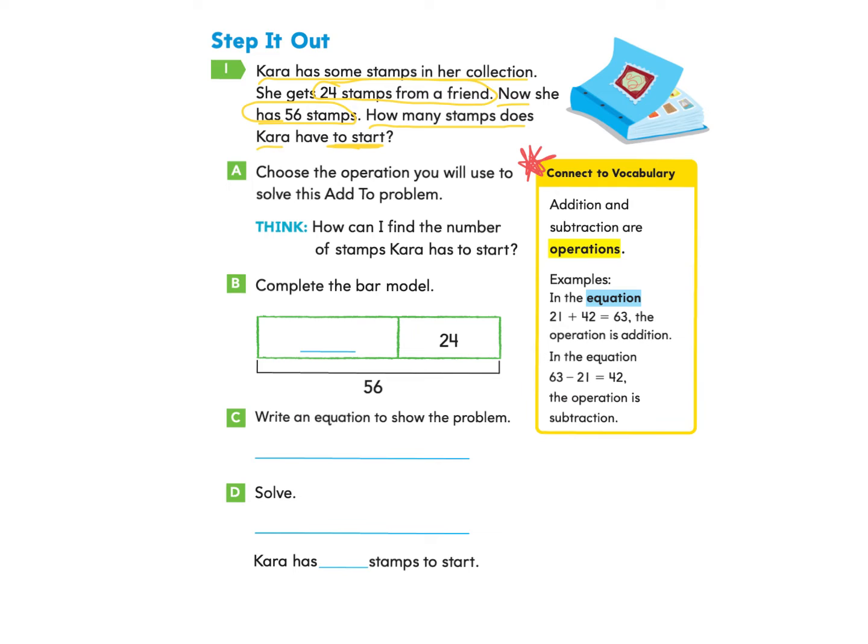So to solve this bar model, I can start with the number 24 and count on till I reach the number 56. That's one way for me to solve this equation of what the unknown part is here. Another way for me to solve this equation is to start with 56 and count down until I reach 24 and find the difference. So you can choose to complete this bar model however you'd like if you want to pause and come back.